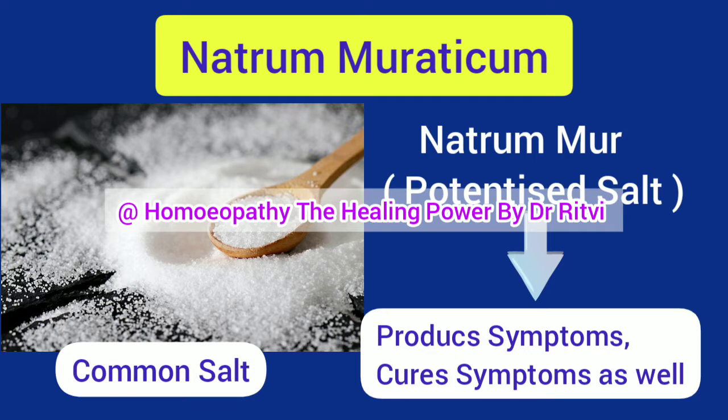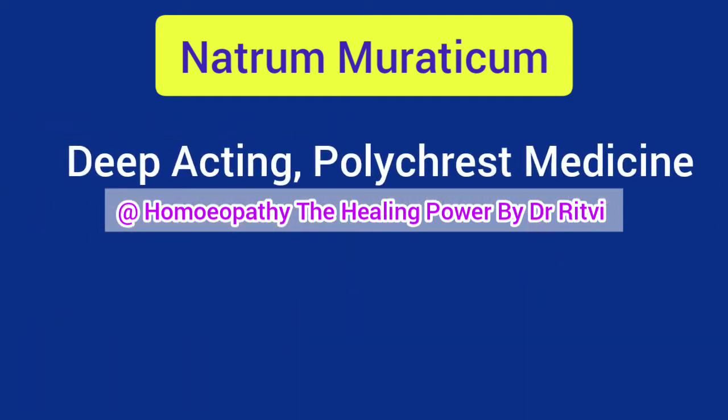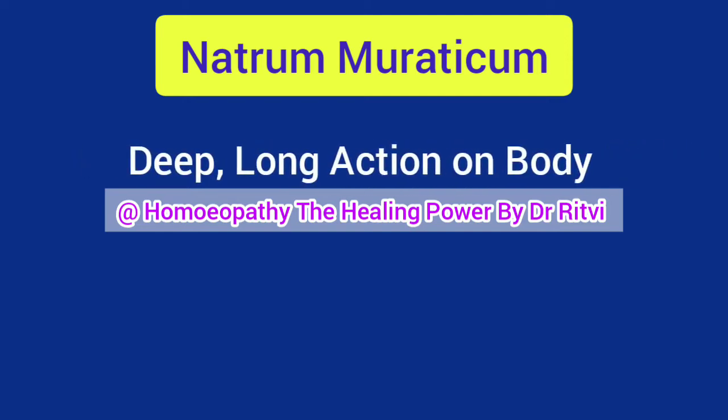And in a similar way, when the same medicine is given to sick or diseased people, it reduces their disease condition. This example is nothing but the power of drug dynamization. Natrum Mur is one of the polychrest and deep-acting homeopathic medicines. It is one of the most important medicines of our homeopathic materia medica, and it has a very long and deep action on the human body.